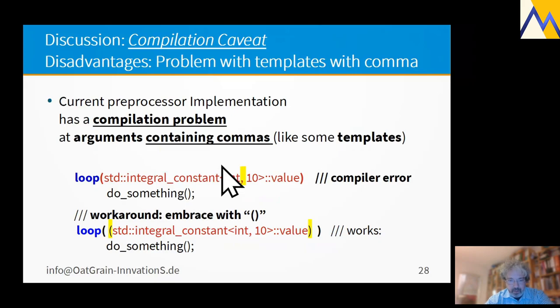This is the compiling caveat I have. Due to the preprocessor limitations, it's only about having templates that contain commas. So when you use, by force, generate an int of 10 using this construct, it will fail because this comma is identified as a separator of this argument and that argument. But there's a workaround by embracing it with regular braces.